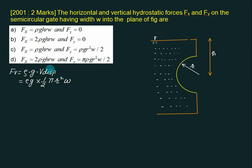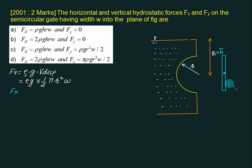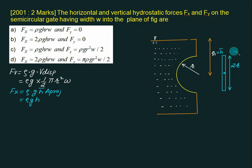To calculate the horizontal force fx, we visualize the projected area on the vertical plane — it appears as a rectangle with height 2r and width w. The centroid depth H-bar equals h (same as the plate center). So fx = ρg × H-bar × A projected = ρg × h × (2r × w) = 2ρghrw. This corresponds to choice D being correct.